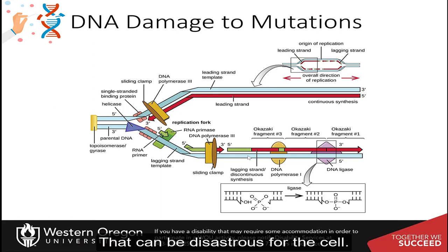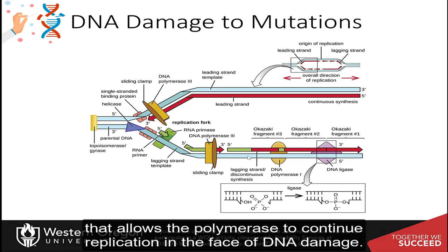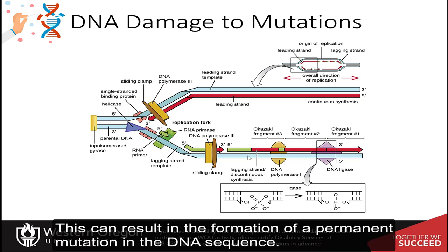That could be disastrous for the cell. Thus, it follows a path termed as error-prone bypass or translesion synthesis that allows the polymerase to continue replication in the face of DNA damage. This can result in the formation of a permanent mutation in the DNA sequence.